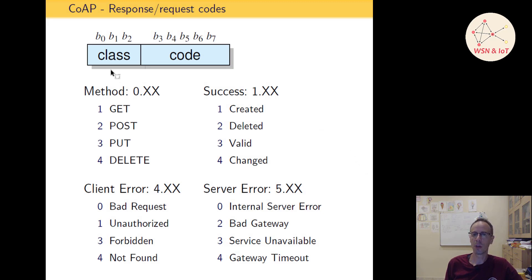The CoAP status codes are quite similar to the HTTP status codes. We're having eight bits: three bits for a class part and five bits for code. The class can be, for example, method—it's a class zero. Success is class one, client error class four, and server error class five. So after the class it's followed from a code.